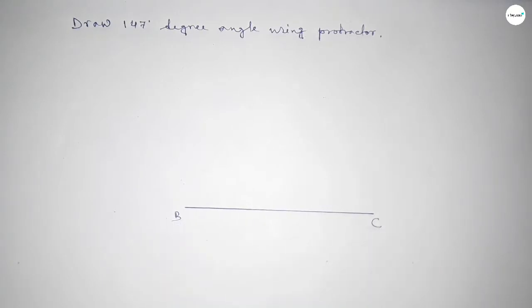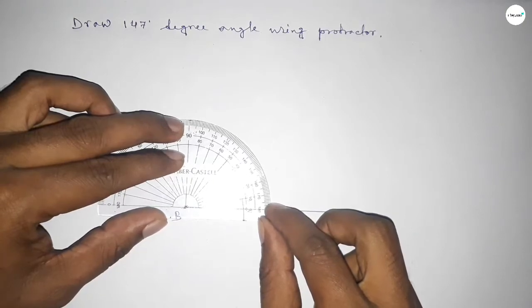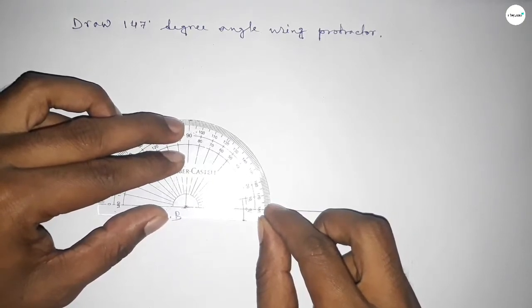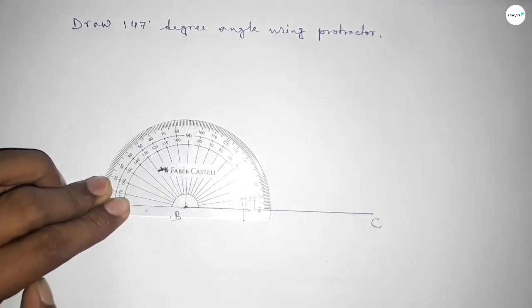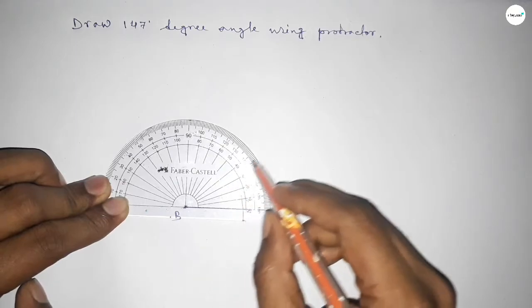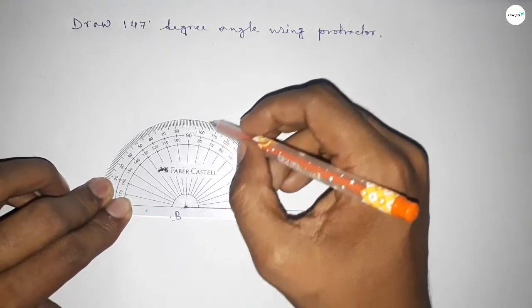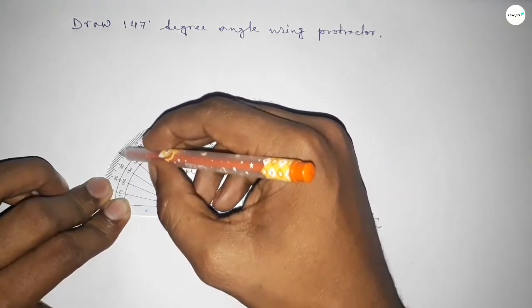Now putting the protractor on the point B perfectly, then counting the angles. So this is starting angle: 0, 10, 20, 30, 40, 50, 60, 70, 80, 90, 100, 110, 120, 130, 140, 145.